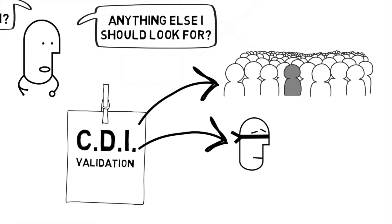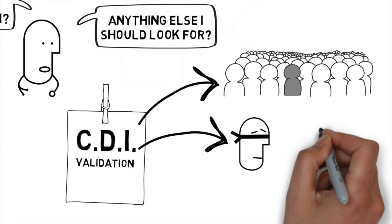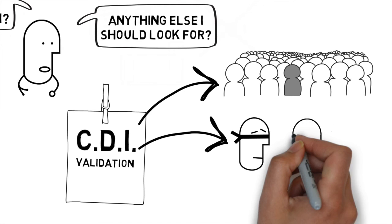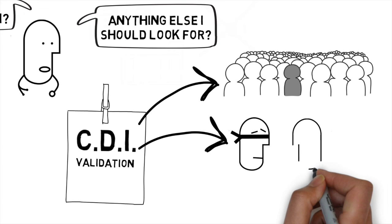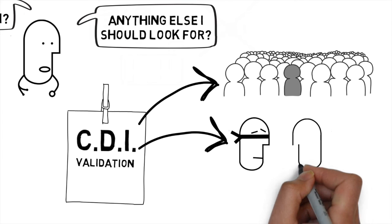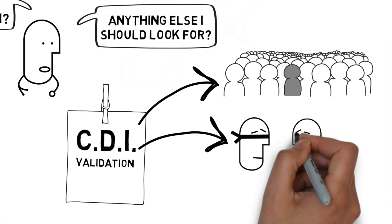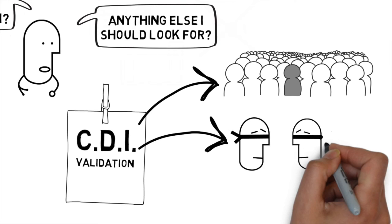As a counterpoint to this we want to make sure that whoever was establishing the gold standard or criterion standard for this outcome didn't know how the patient performed on the clinical decision instrument. Again because if they know how the patient performed on the clinical decision instrument they may be biased in how they report the gold or criterion standard.